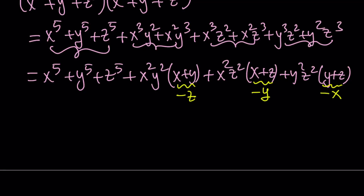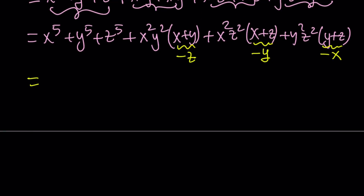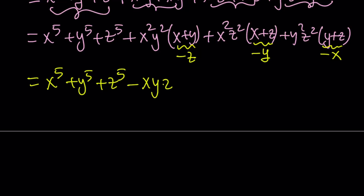Our expression is now factorable and much nicer. We get x to the fifth plus y to the fifth plus z to the fifth. Notice all the remaining terms are negative, so we can factor out negative xyz, leaving inside the parentheses xy plus xz plus yz — everything inside is positive. This is really nice and simple.